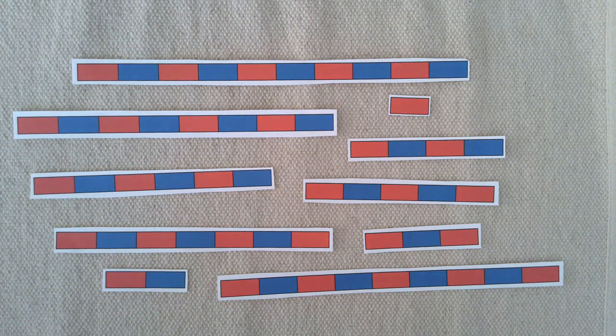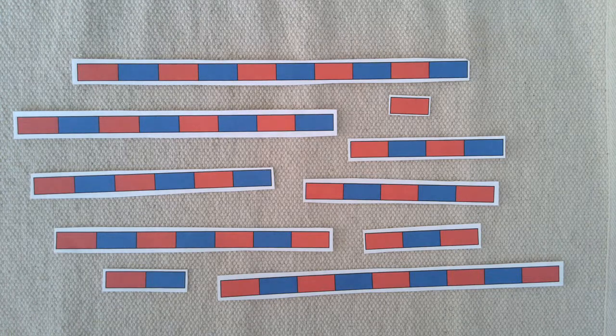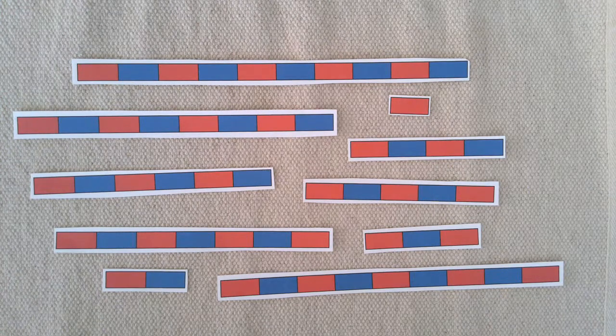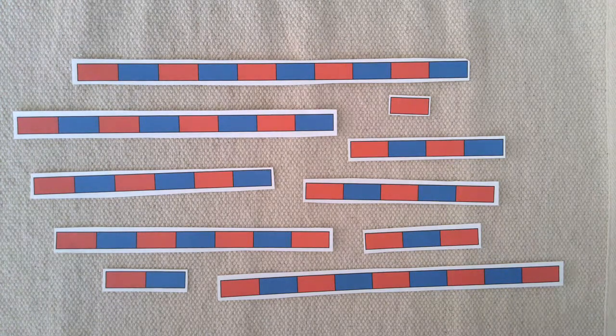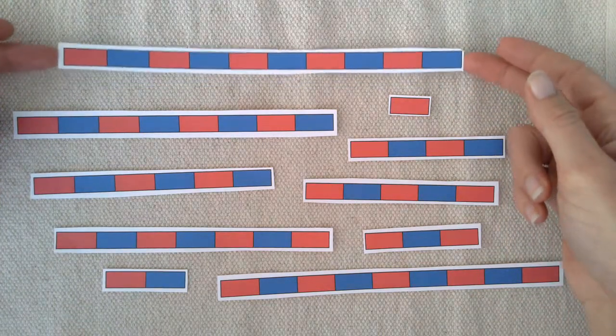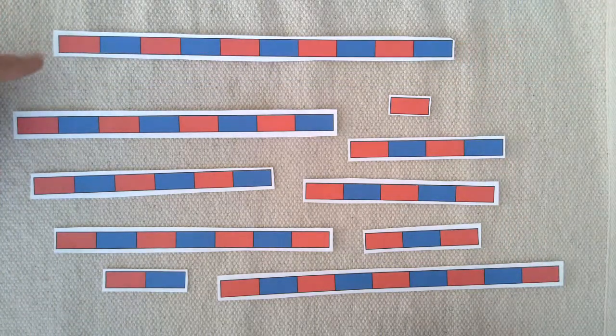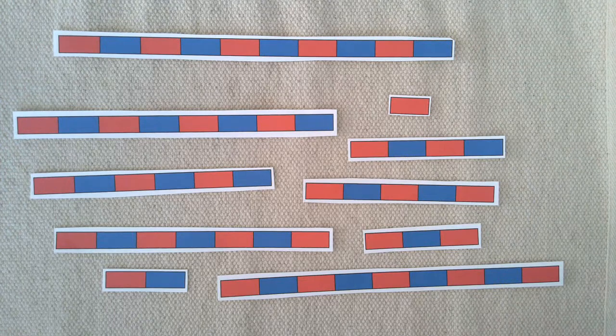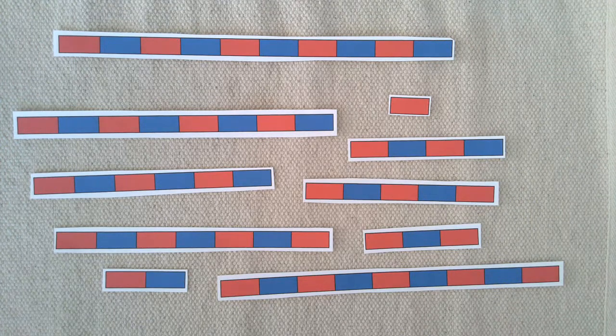This lesson is for subtraction with the red and blue number rods. The first step is to have the child find the 10 rod. Here it is at the top. The next step is to have them make combinations of 10.